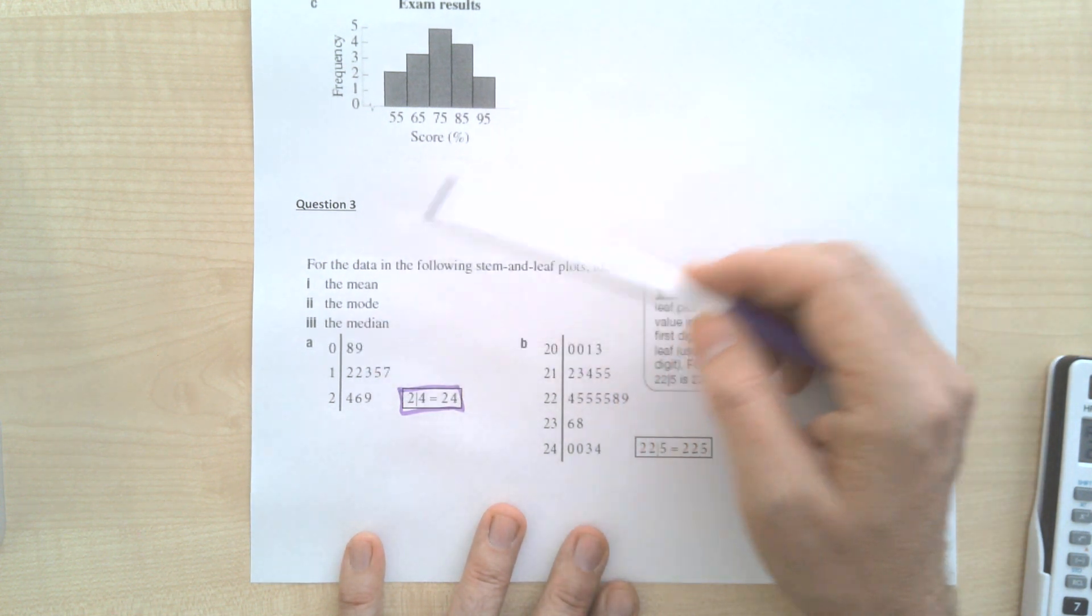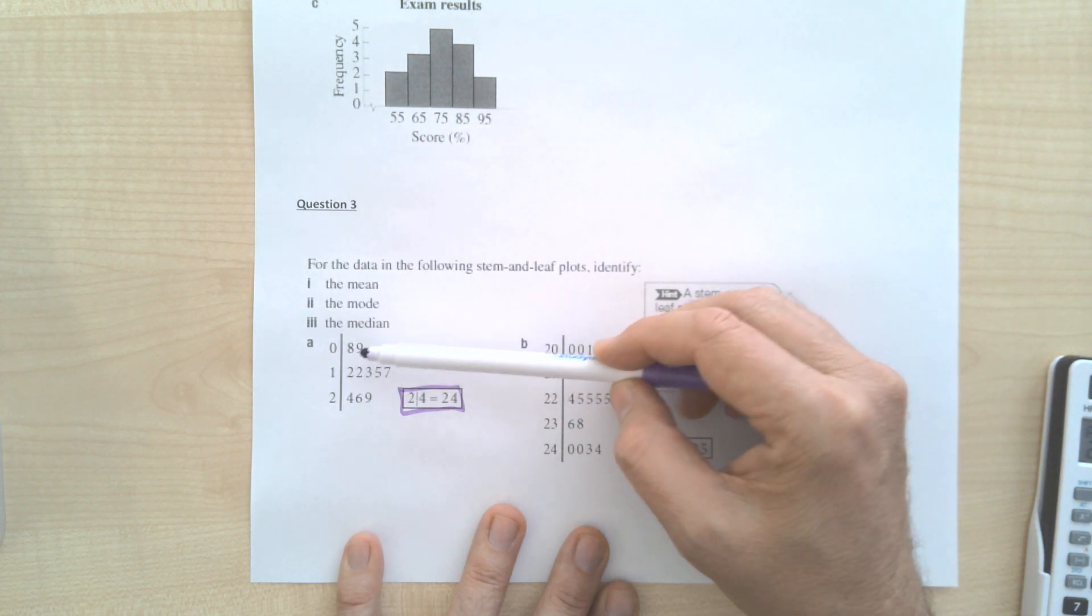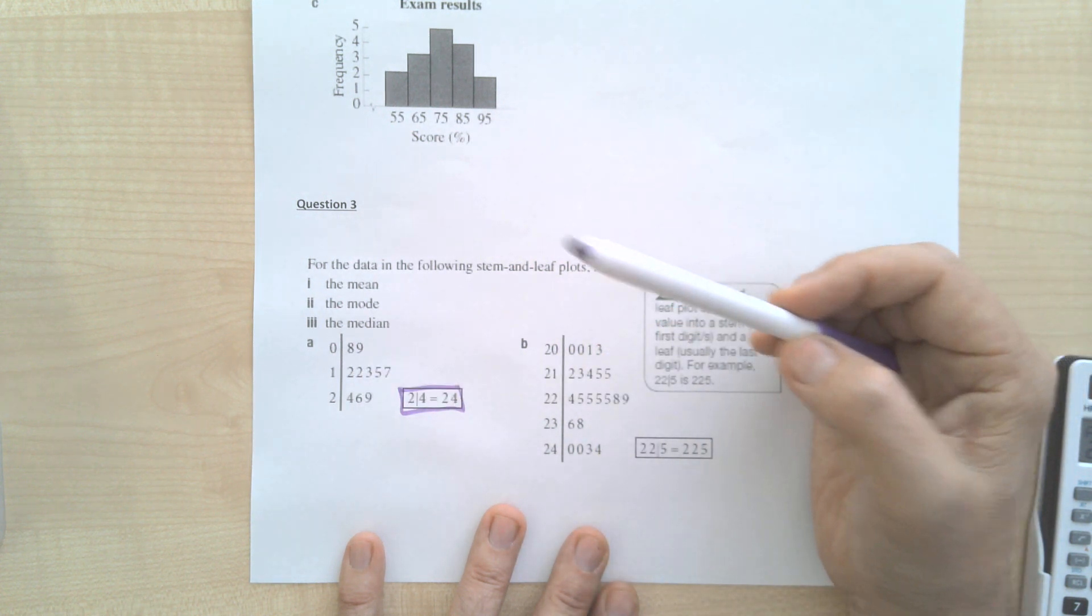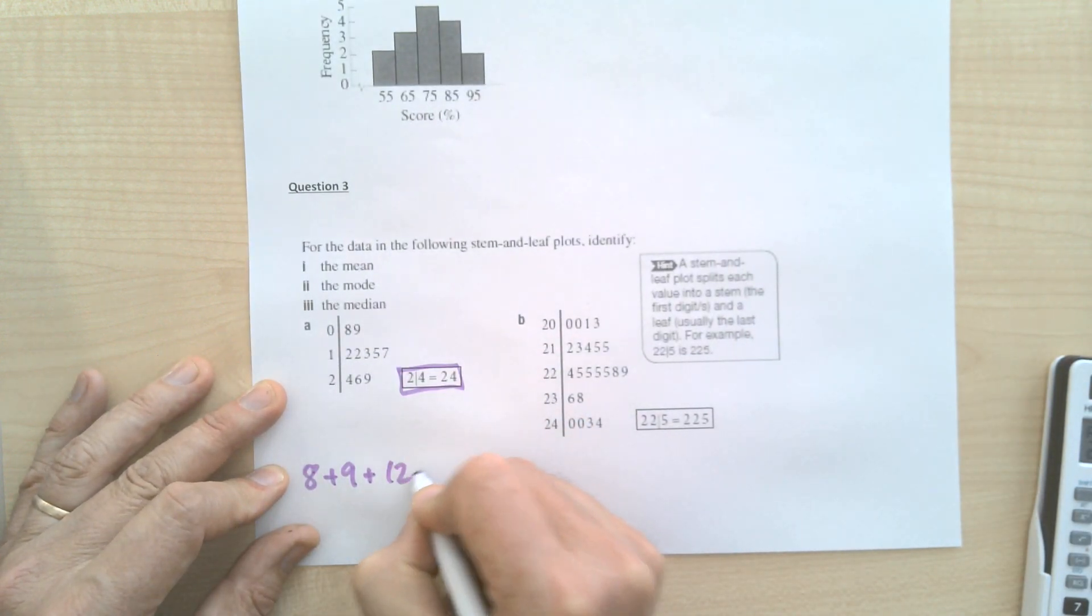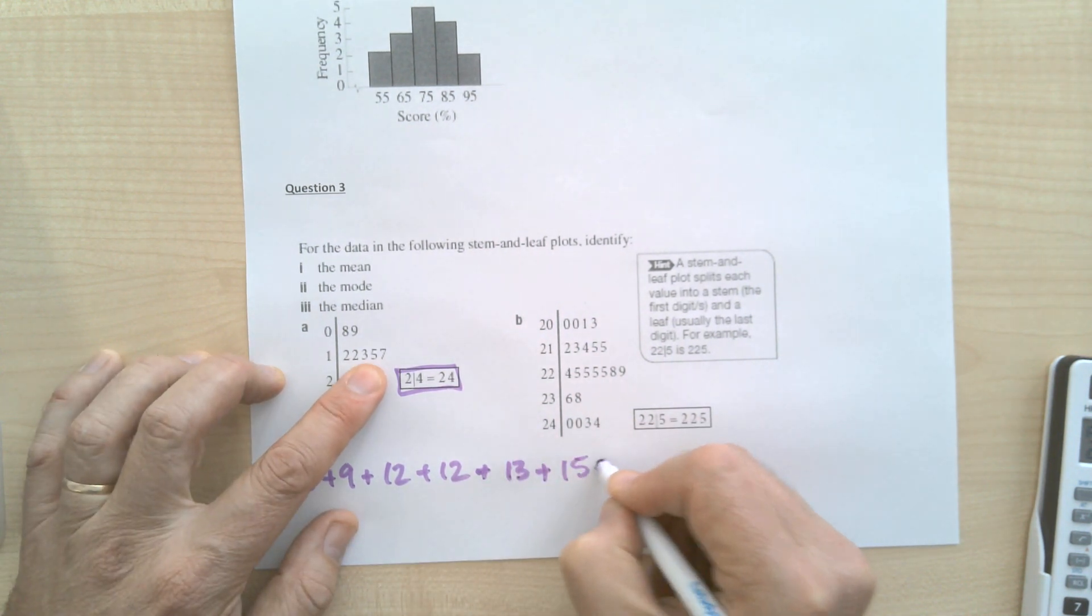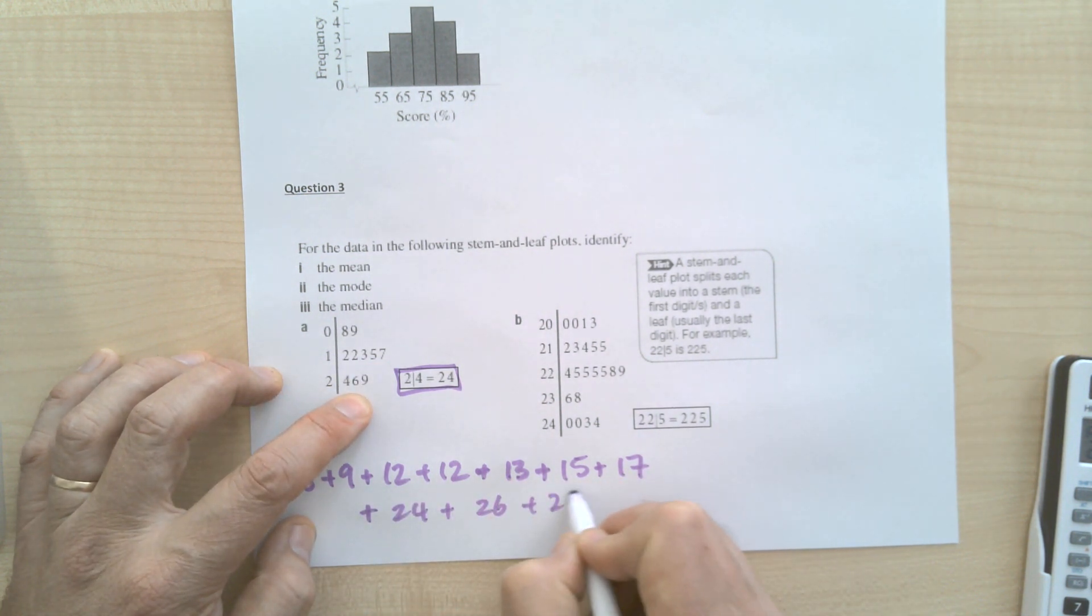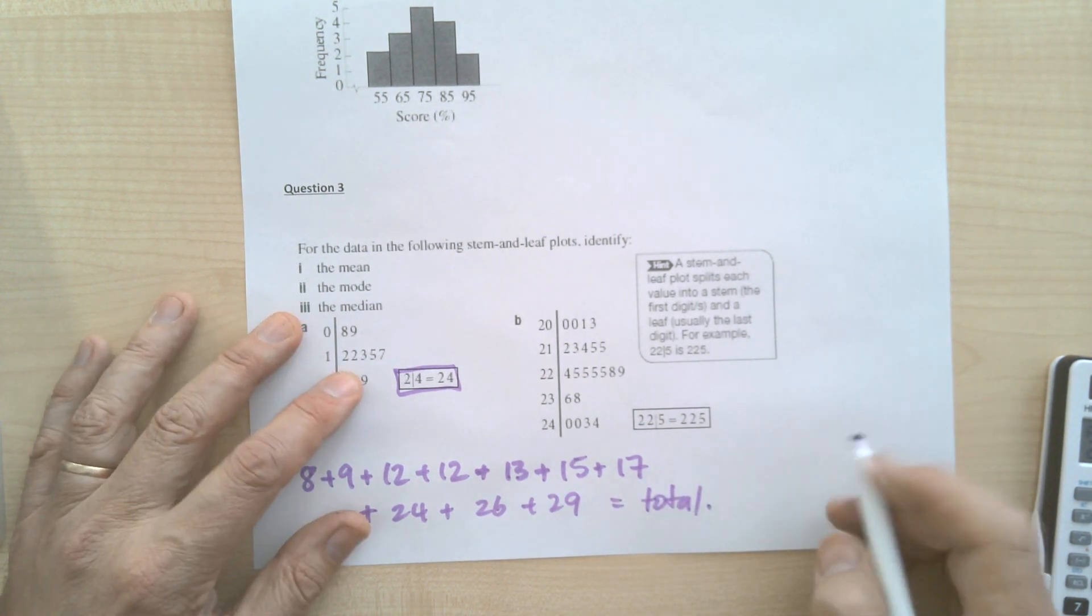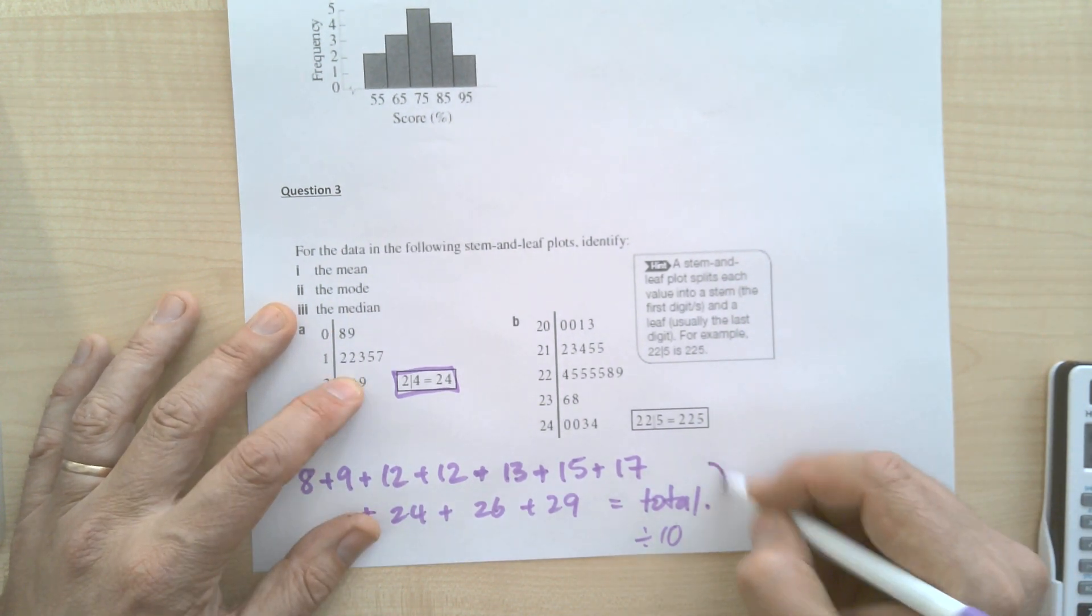So then it's going to find the mean, the mode, and the median based on that. So for instance, I know there's 10 numbers. So what I would do: I would go 8 plus 9 plus 12 plus 12 plus 13 plus 15 plus 17 plus 24 plus 26 plus 29, and that's the total. You do that in the calculator, and then you divide by 10 because there's 10 numbers. And that would equal the mean.